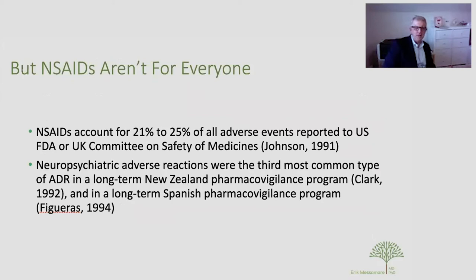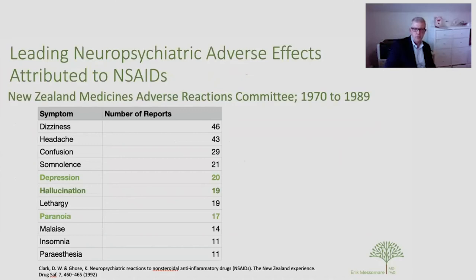Many countries have centralized pharmacovigilance or adverse effect tracking systems. In the U.S. and in the UK, NSAIDs accounted for nearly a quarter of all adverse drug effects reported to those monitoring systems. In studies both in New Zealand and in Spain, neuropsychiatric adverse reactions were number three — so they accounted for about 20 to 25 percent of all adverse reactions, with neuropsychiatric effects being the third leading cause.